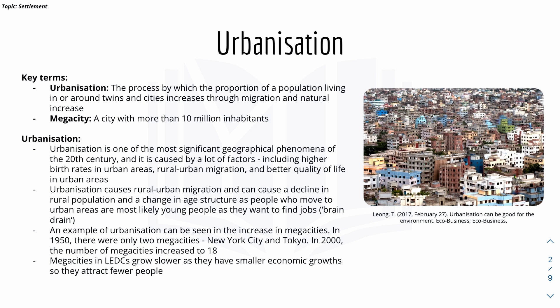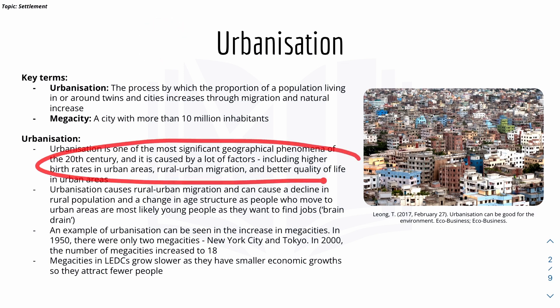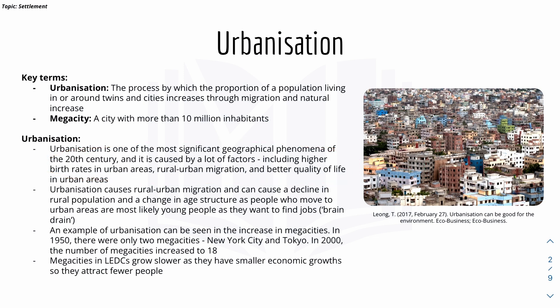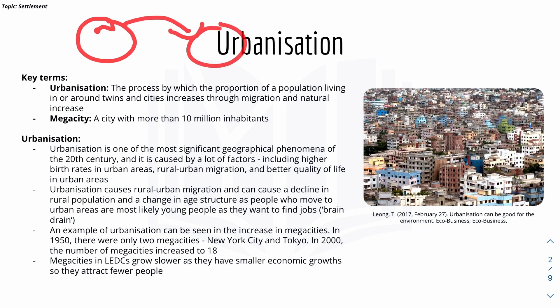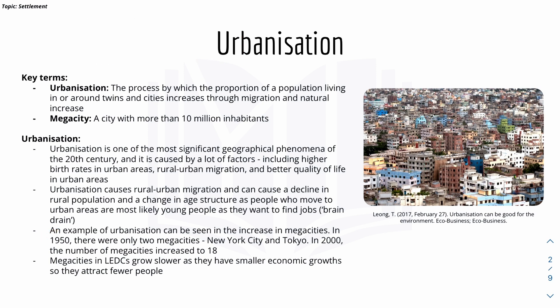As mentioned in the last video, urbanization is a process by which the proportion of a population living in or around towns and cities increases through migration and natural increase. The population in an urban area increases due to different factors: higher birth rates in urban areas, rural-urban migration, and better quality of life in urban areas which includes better sanitation, better job opportunities, and higher wages. Urbanization causes rural-urban migration and can cause a decline in rural population, leaving villages and towns empty. An example of urbanization can be seen in the increase in megacities — in 1950 there were only two megacities, New York City and Tokyo, but 50 years later in 2000 the number increased to 18.